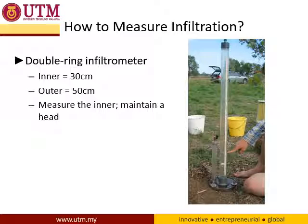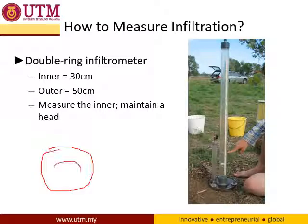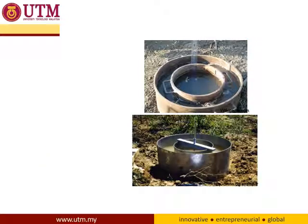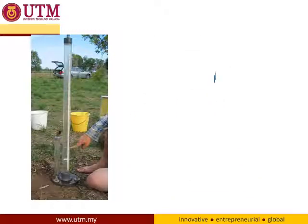Why do we call it a double ring? Because we put two rings — an outer ring and an inner ring. We study the water inside the inner ring because we need to control the losses of water. We measure how much water is lost inside the inner ring according to time.